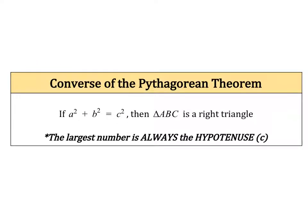Now we're going to talk about a different use of the Pythagorean Theorem, which is checking to see if a triangle is a right triangle. If we do A squared plus B squared equals C squared and we get a true statement, then we know the triangle is a right triangle. If we get a statement that is not true, then we know that the triangle is not a right triangle. The Pythagorean Theorem must work for a triangle to be a right triangle.